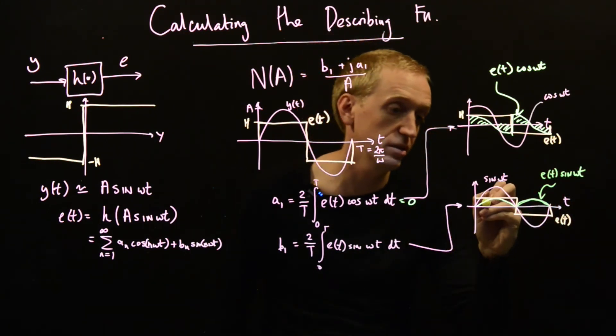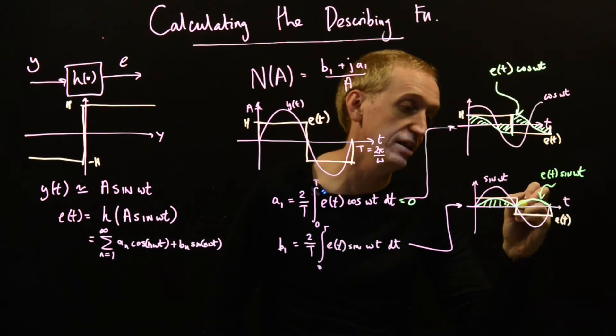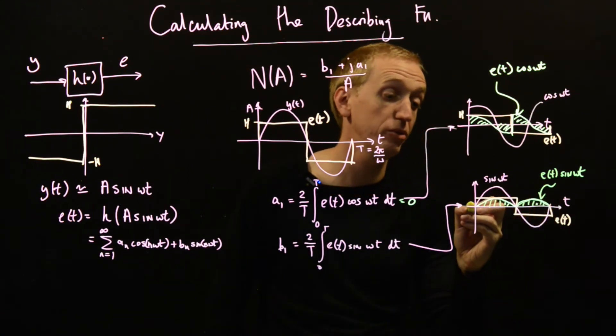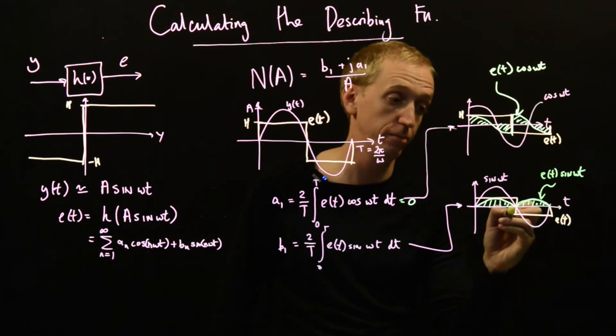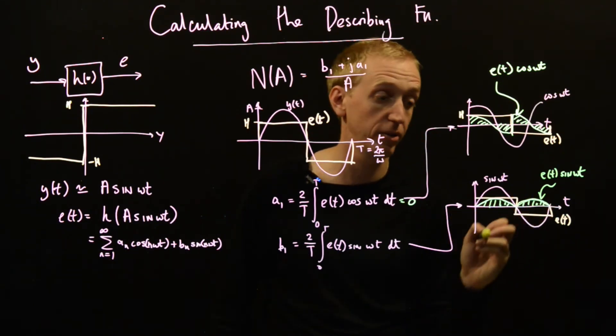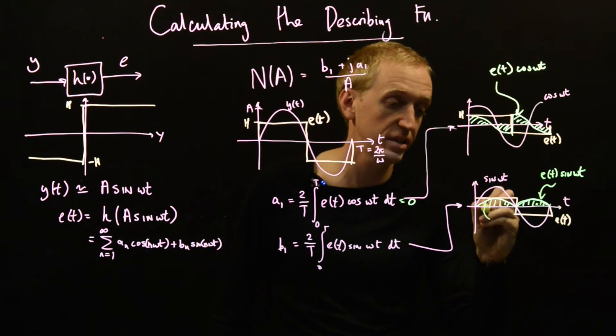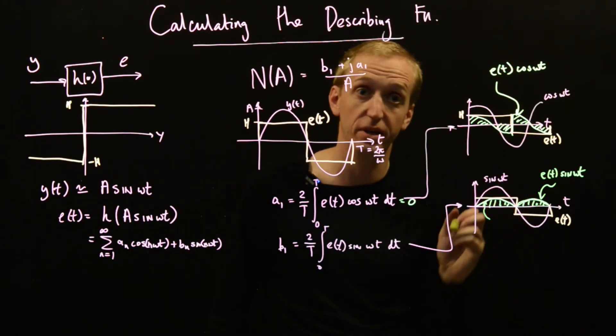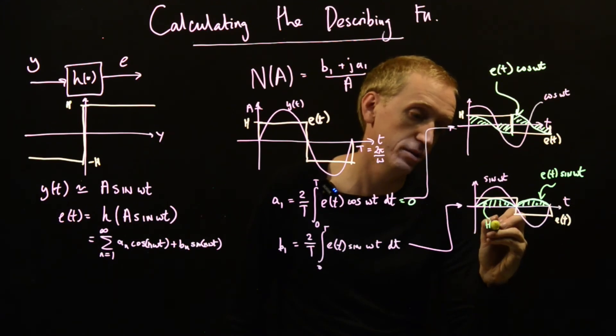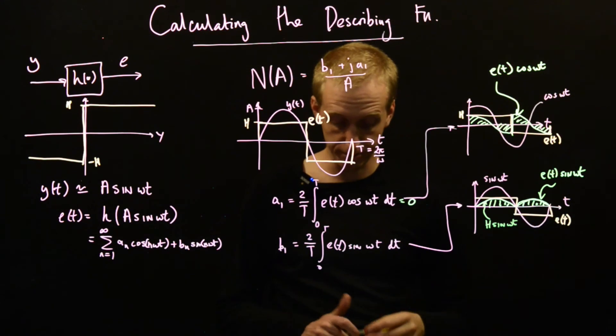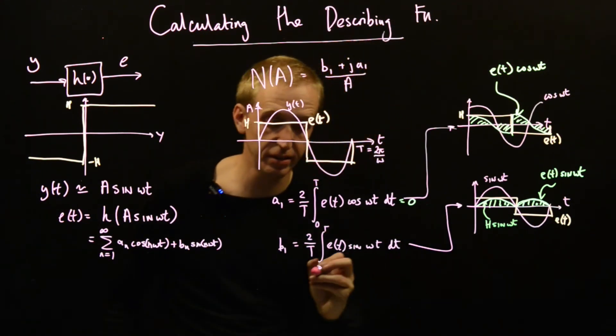And so now what do you notice? You notice that this area here is equal to this area here. So actually we only need to perform the integral over the first half of the period of our sinusoid. And what is this curve equal to on that first half? Well, this is just equal to h times sin(ωt).